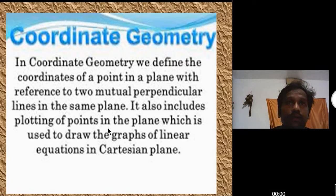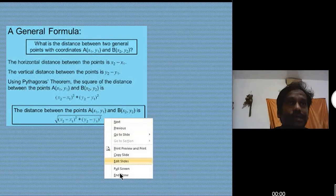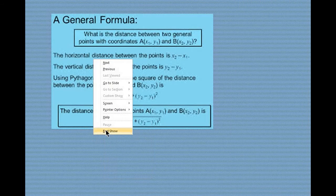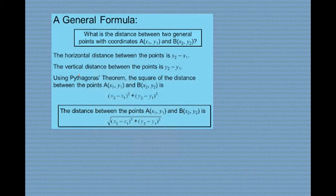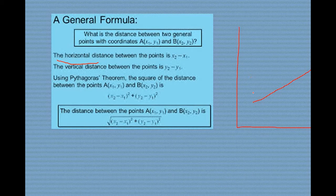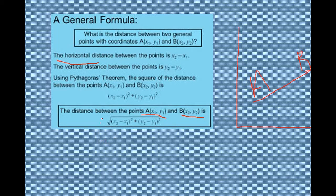See here, what is the formula that we are going to use. This is the distance formula that we have to use. The horizontal distance between the point is x2 minus x1. Suppose this is my y axis, this is my x axis. One point is A and one point is B. So we have to find the distance between A and B, and that is called the distance formula. A is (x1, y1), B is (x2, y2). The formula is: under root of (x2 minus x1) whole square plus (y2 minus y1) whole square.